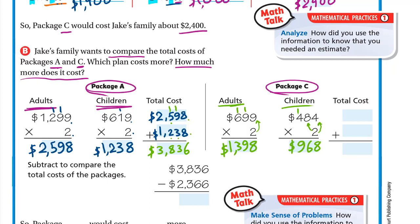Adding $1398 plus $968 for package C total: 8 plus 8 is 16, write 6 carry 1. 1 plus 9 is 10 plus 6 is 16, write 6 carry 1. 1 plus 3 is 4 plus 9 is 13, write 3 carry 1. 1 plus 1 is 2. So the total cost for package C is $2366.